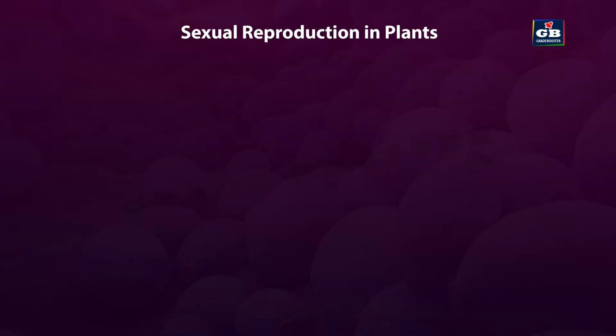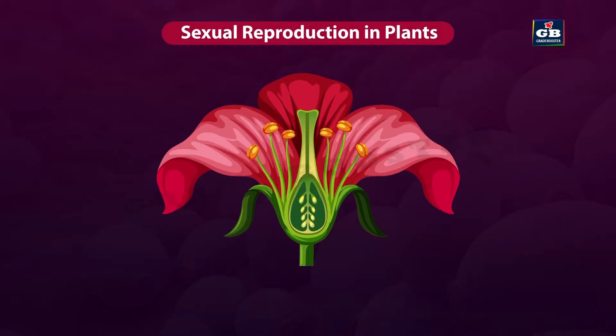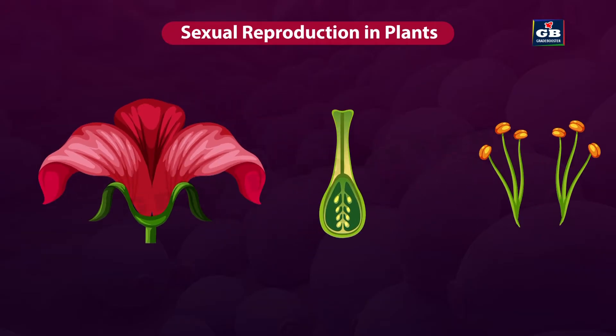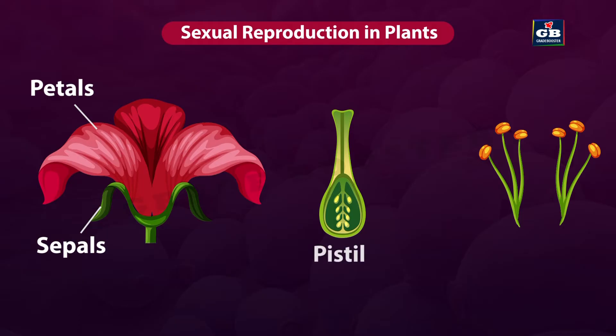Sexual reproduction in plants. Flower is the reproductive part of the plant. These are sepals. These are petals. This is pistil.